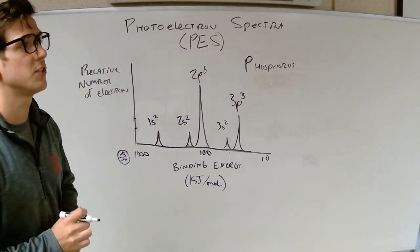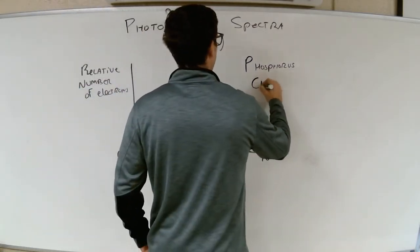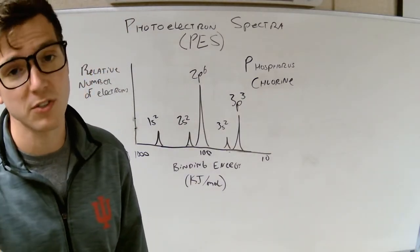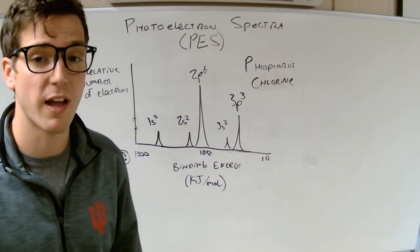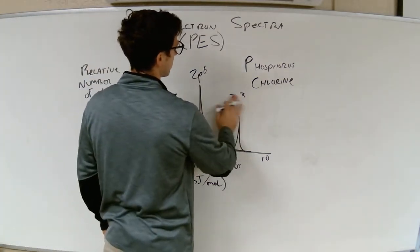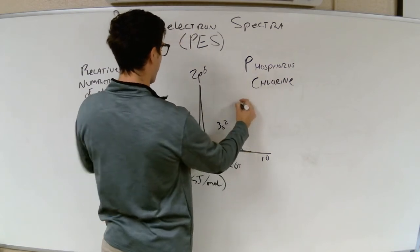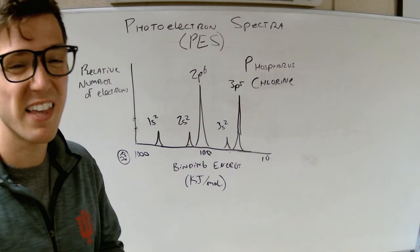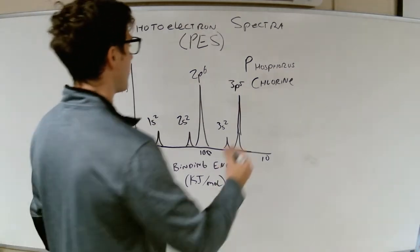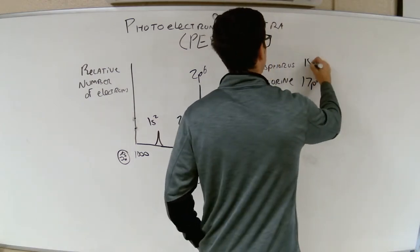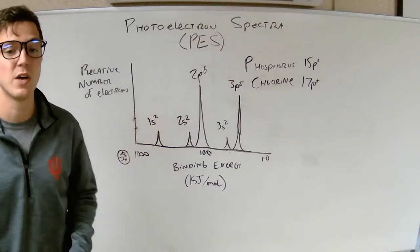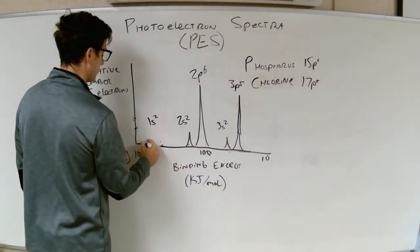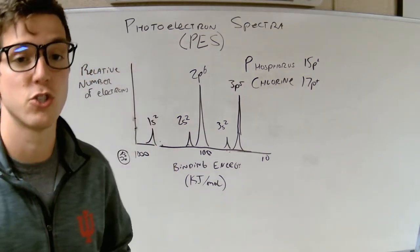So, what if I were to give you, instead of phosphorus, I gave you chlorine. How would this look different if I gave you chlorine? Well, first thing, chlorine ends with 3p5. So, first off the bat, we could say this guy is going to go ahead and he's going to increase. He's not going to be quite as high as 2p6, but he'll be pretty dang close. The other thing that is going to happen is everything's going to shift a little bit left. Again, chlorine has 17 protons. Phosphorus has 15 protons. So, everything's going to shift a little bit more left because it's going to take a lot more energy now to knock out those electrons.